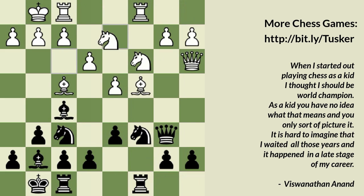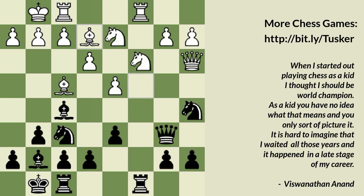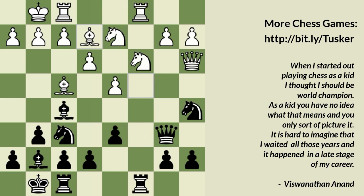After Bg7, Black's development is really very smooth and there aren't any problems for Black, as all the opening problems are solved very easily in this position. But what was played was Knight c6.